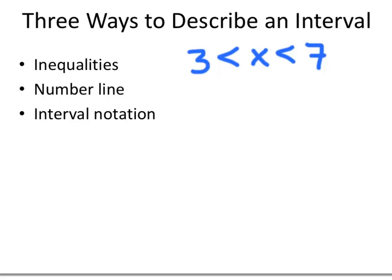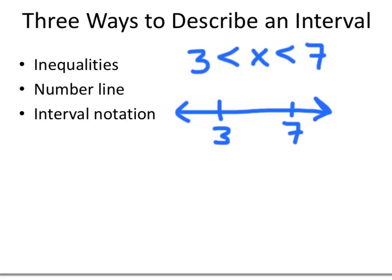If we wanted to describe it using a number line, somewhere on our number line is the number 3, and somewhere else is the number 7. We're looking for the numbers between 3 and 7, so we draw an open circle at 3 and an open circle at 7 to indicate we don't want to include them, and then we shade in the part of the number line between 3 and 7.